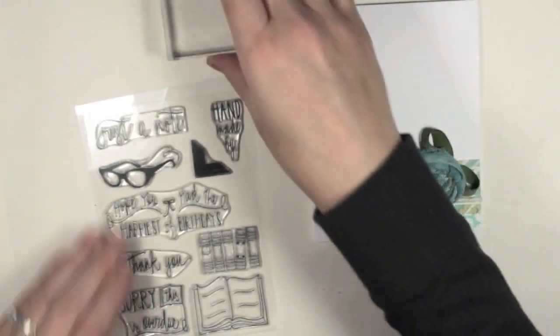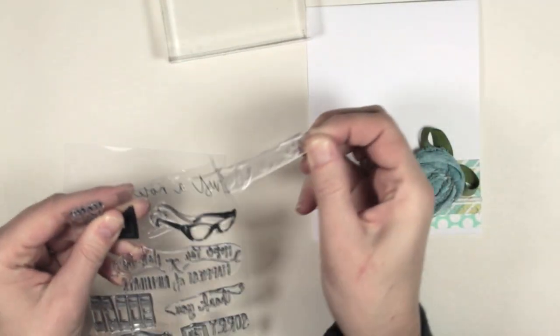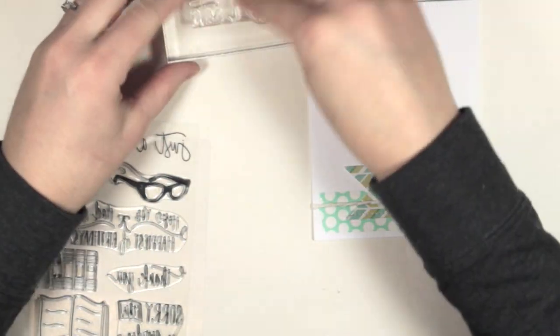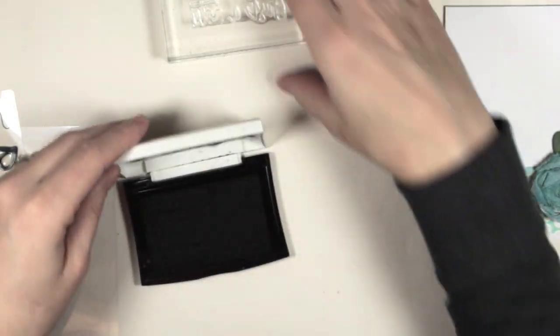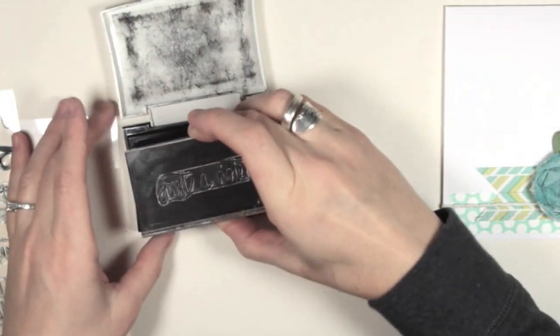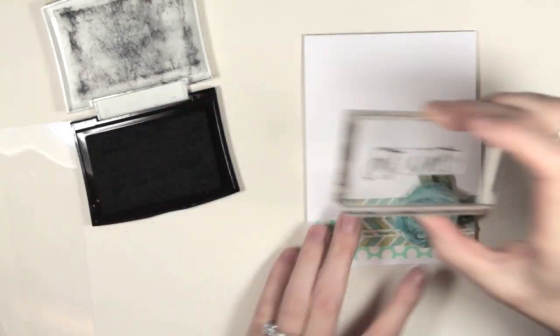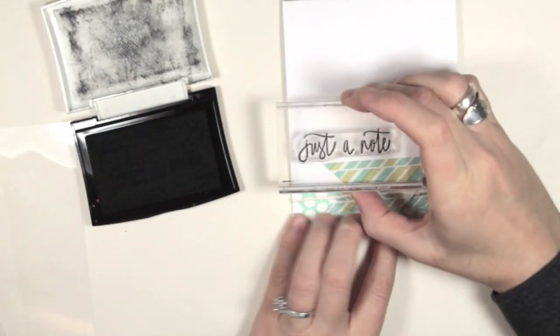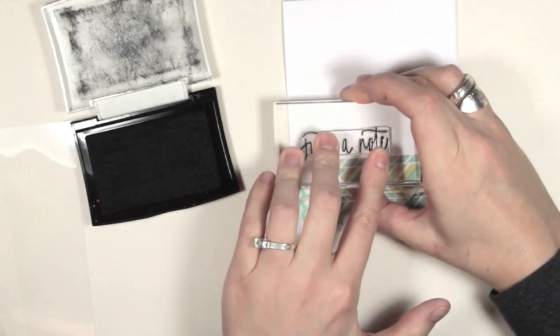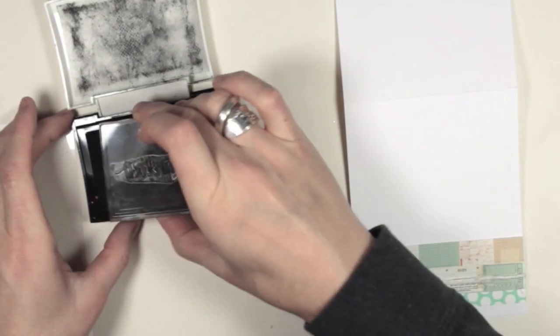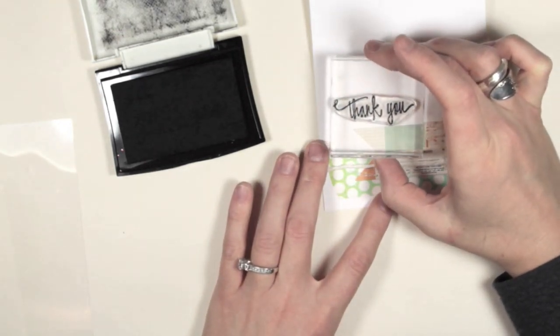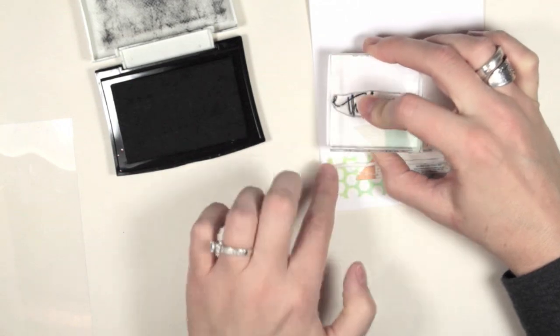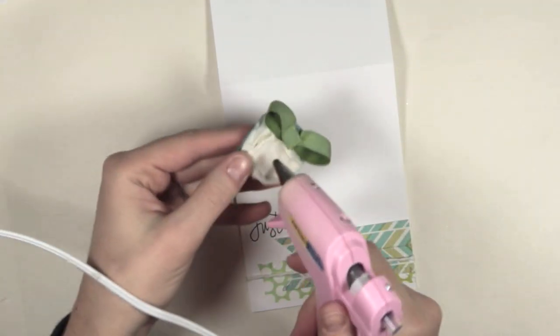I want to add a sentiment to a couple of these cards. I'm taking some multi-purpose sentiments found in the set and inking those stamps with black Versafine ink. I'm placing that flower there to have an idea where I want my sentiment, then I'll stamp another sentiment on a second card.